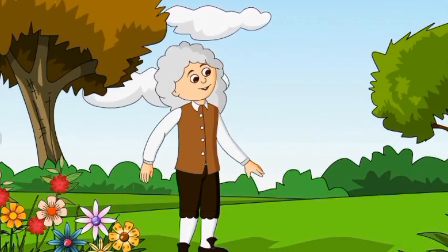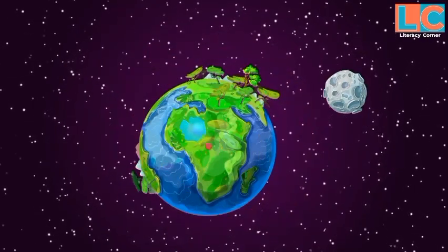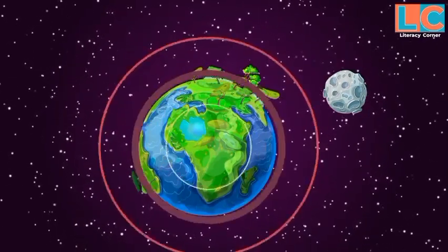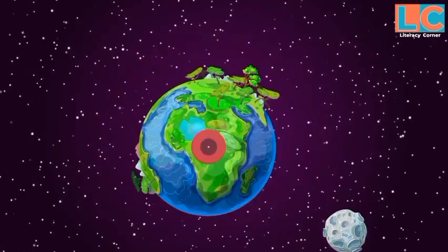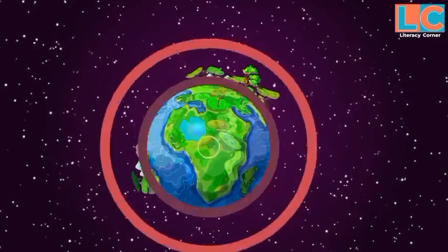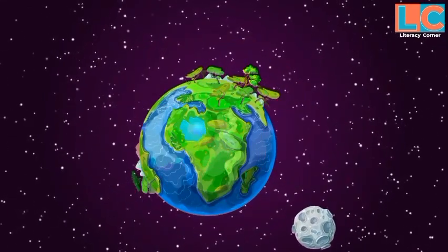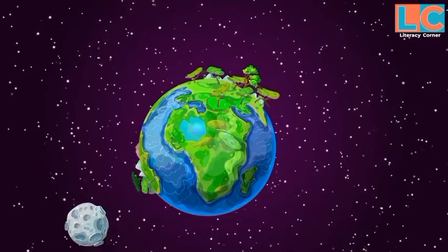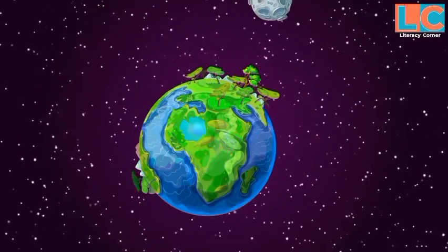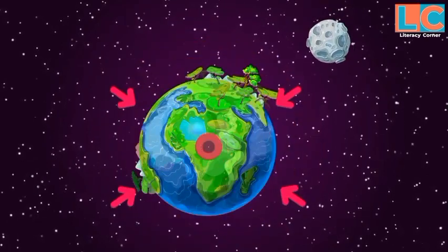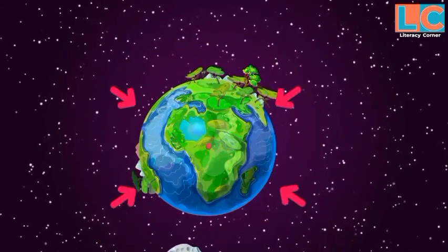Newton also realized that the moon would fly away from Earth in a straight line tangent to its orbit if some force was not causing it to fall toward Earth. The moon is only a projectile circling around the Earth under the attraction of gravity. Newton called this force gravity and determined that gravitational forces exist between all objects.